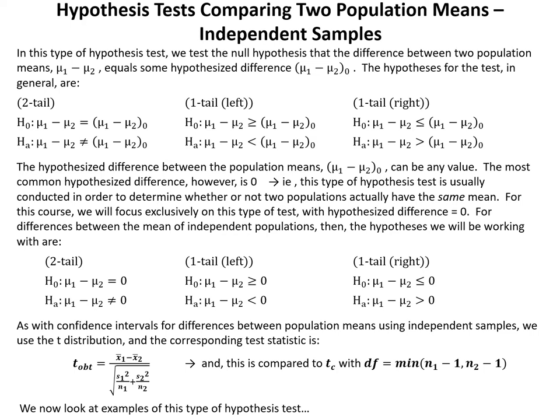For differences between the means of independent populations, the hypotheses we'll be working with replace mu1 minus mu2 naught with the value of zero. As with confidence intervals for differences between population means using independent samples, we use the t-distribution. The corresponding test statistic is: t obtained equals x-bar 1 minus x-bar 2 over the square root of s1 squared over n1 plus s2 squared over n2. We compare this to t-critical, with degrees of freedom equal to the minimum of n1 minus 1 and n2 minus 1.